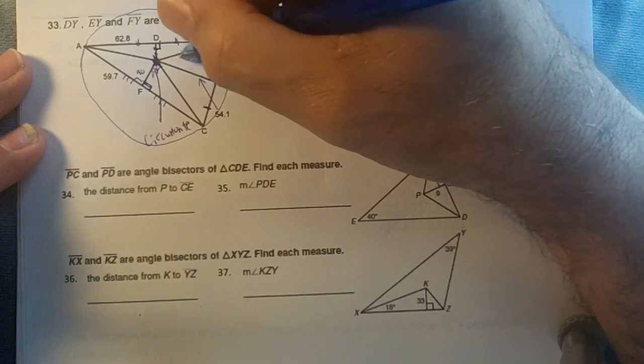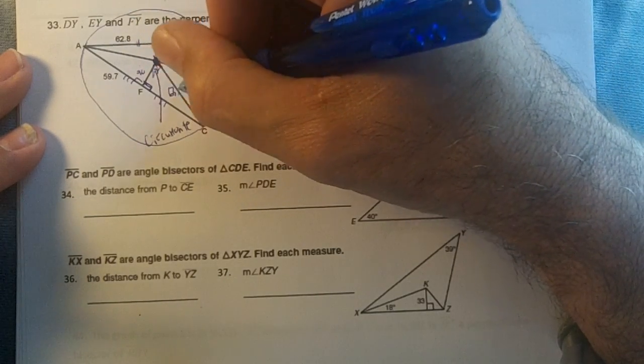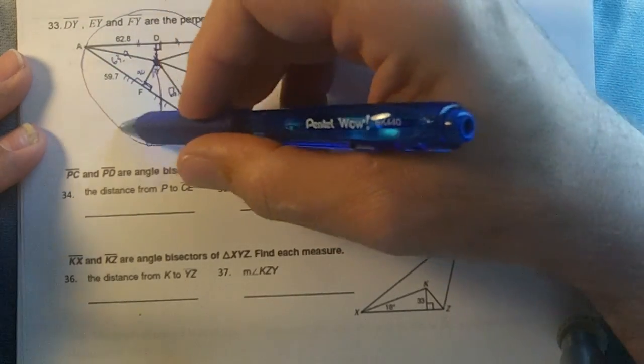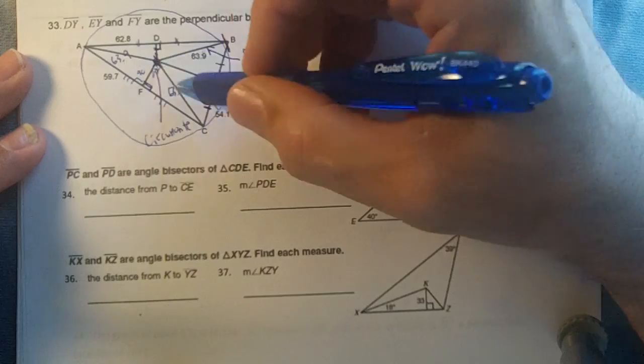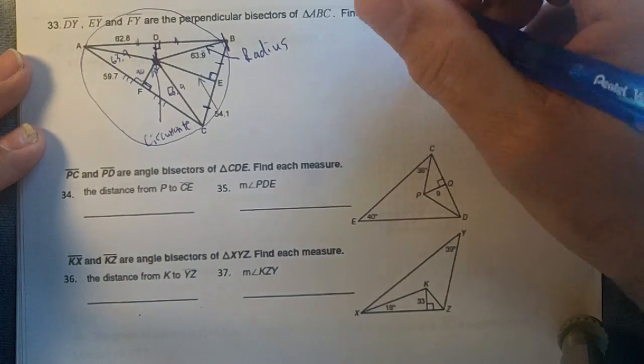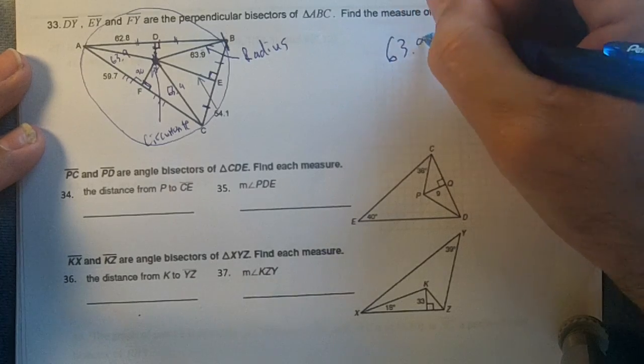This edge is going to be the same, and right here, the 63.9, we go here and here. So the circumcenter draws a circle that goes to the vertices, so the distance from the circumcenter to the vertices are the same. So the measure of AY would be 63.9.